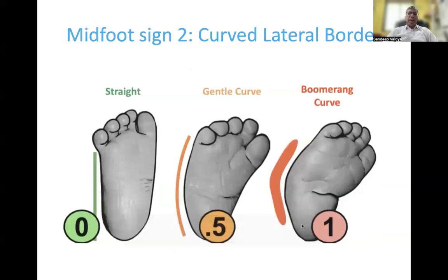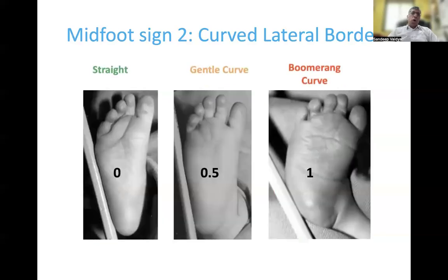The second midfoot sign is the curved lateral border. If the lateral border of the foot is completely straight, the score is 0; a gentle curve gets a score of 0.5 and a boomerang curve gets a score of 1. To study this objectively, place a ruler along the lateral border of the heel. If the ruler is in contact with the lateral border throughout, it scores 0. If the forefoot deviates from the ruler at the level of the tarsometatarsal joint, it scores 0.5, and if the foot deviates even more proximally, it scores 1.